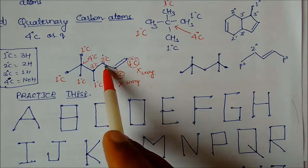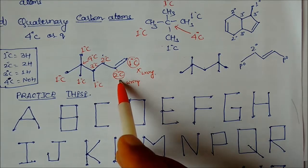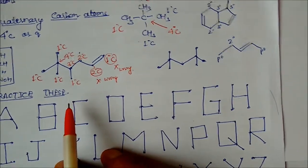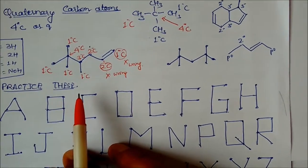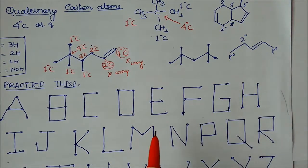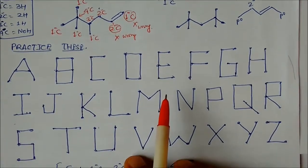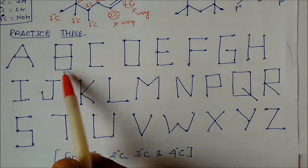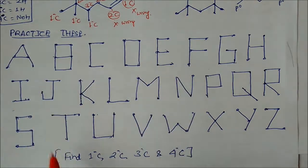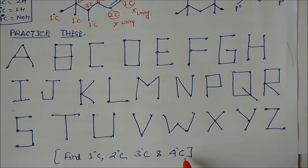Be careful: if you incorrectly label a secondary carbon, that would be a wrong answer. I have drawn some structures labeled A, B, C, D, E so you can identify and practice which are primary, secondary, tertiary, and quaternary carbons for further practice.